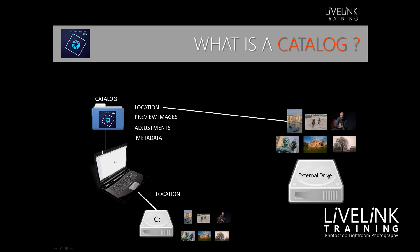Those images could be on an external drive. As long as Photoshop Elements knows where they are and this location link remains intact, then the system works perfectly. The images will not be on our internal drive — they'll be on this external drive — and so our computer will be giving a sigh of relief.